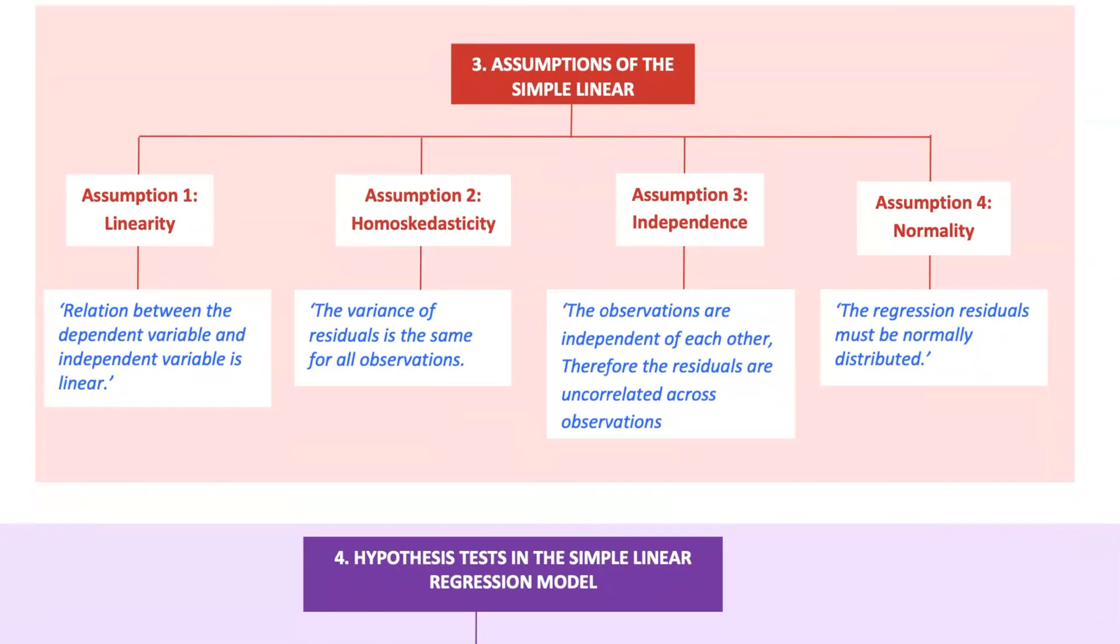To trust our SLR model, we make a few key assumptions. First is linearity. The relationship between x and y is linear. This means that a change in x leads to a proportional change in y. If the relationship is not linear, our model might be biased and give incorrect predictions.